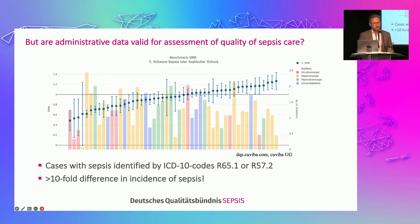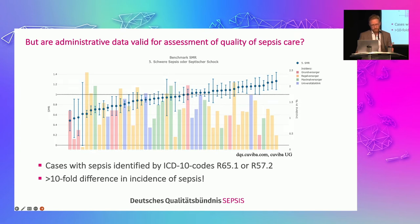We became somewhat suspicious about how valid these data actually are. In a benchmarking chart, the dots represent mortality and you see a large variation, probably indicating good and bad performing hospitals. At the same time, the bars represent incidence of sepsis, and we have a more than tenfold difference in incidence of sepsis between hospitals — and we thought this cannot be explained based on clinical reasons.